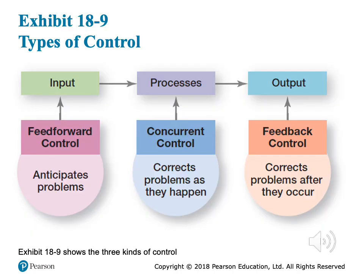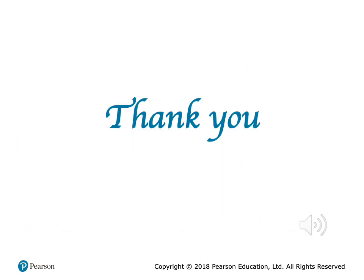This graph shows the three types of control along with the input, process, and output of any process. Feedforward control is done in the input phase — we anticipate and forecast problems and try to fix them before they occur. Concurrent control is done in the process phase — we correct problems as they happen. Feedback control is done in the output phase — we correct problems after they occur. That brings us to the end of our chapter. Thank you. If you have any questions, you can send me an email.